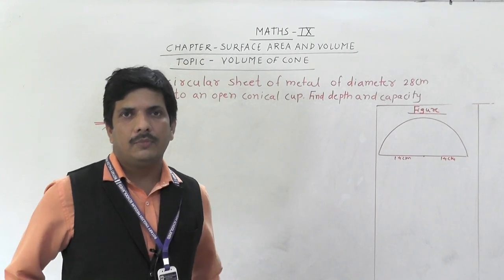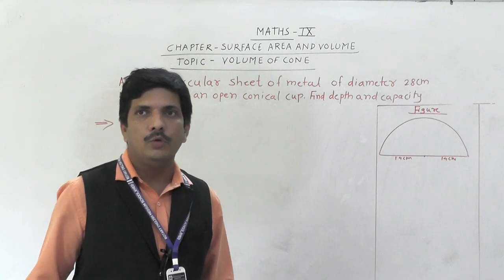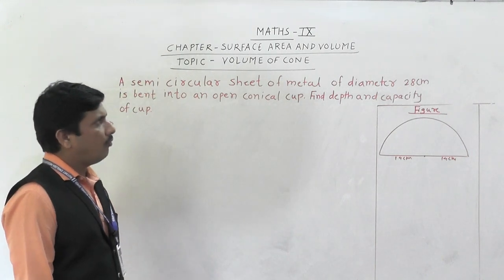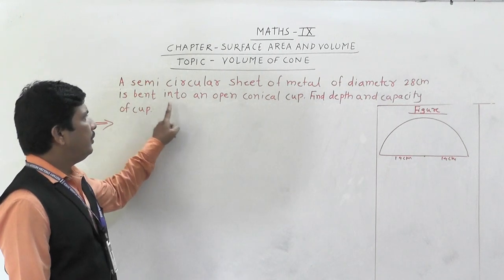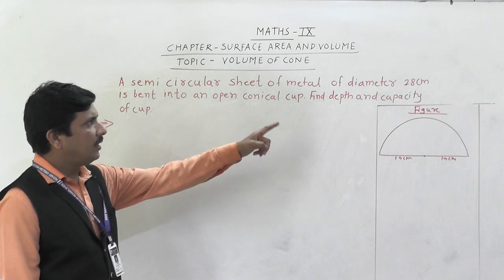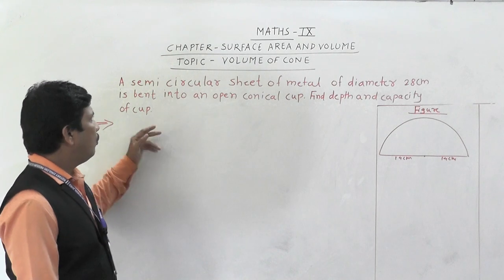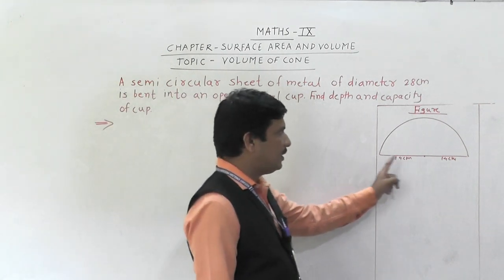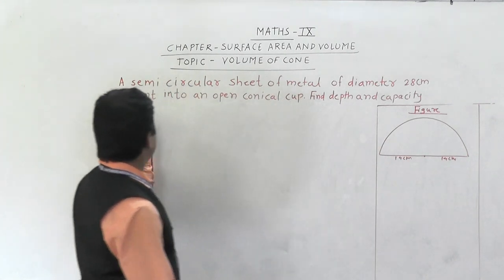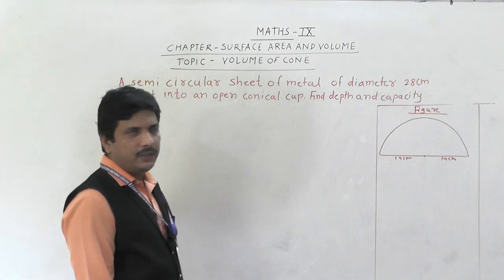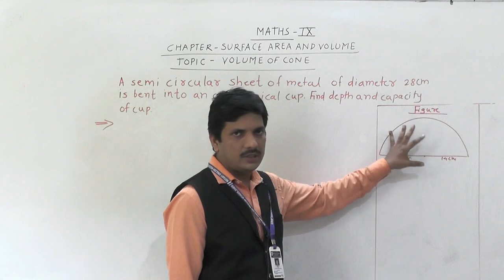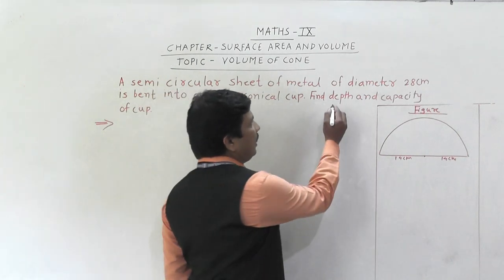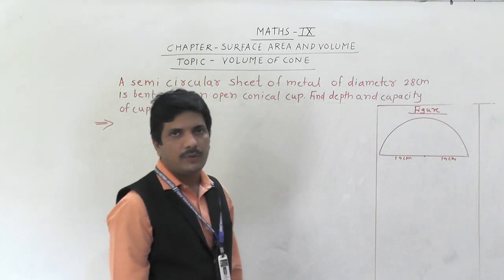Hello everybody, today again I am with you with some problems on the concept volume of cone. Today's first problem: a semi-circular sheet of metal of diameter 28 centimeter is bent into an open conical curve. Find the depth and capacity of the curve. So we need to find the volume and depth, where depth means height.